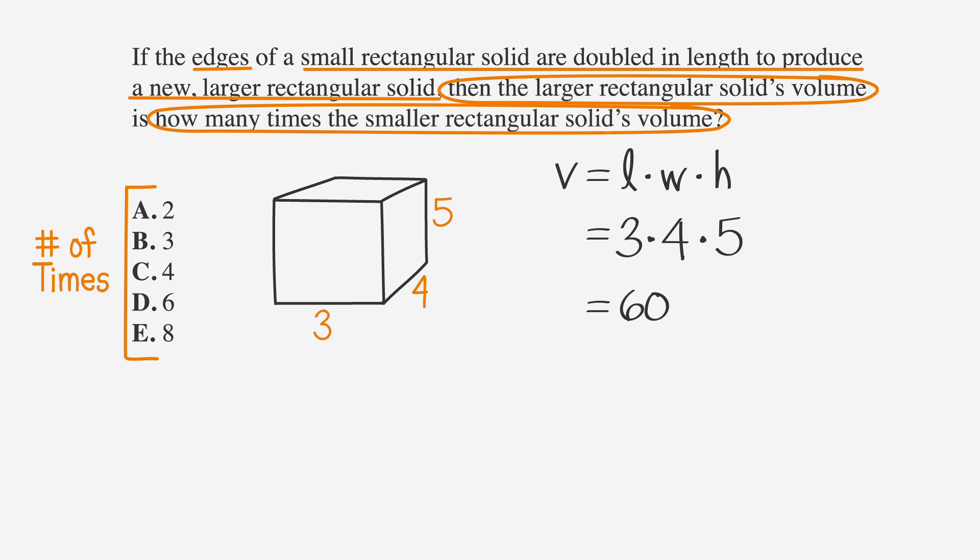To find the volume of a rectangular solid that's twice the size, we'll have to double the length, the width, and the height. The new solid's length is 6, width is 8, and height is 10.